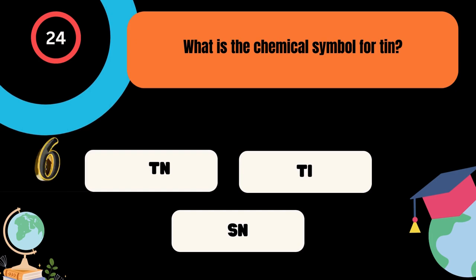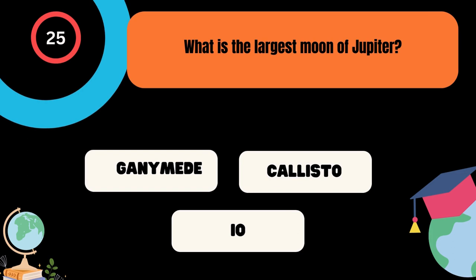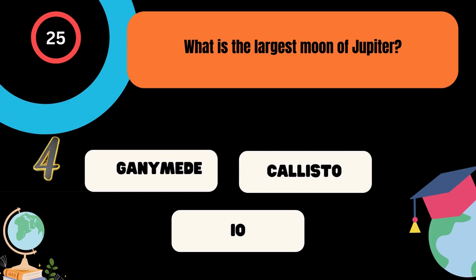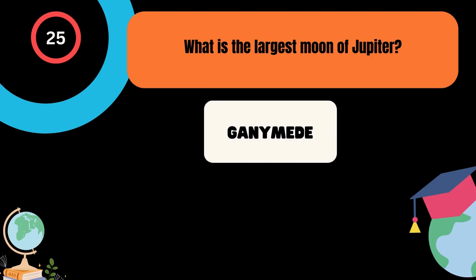What is the chemical symbol for tin? A. Tn, B. Ti, C. Sn. The correct answer is Sn. What is the largest moon of Jupiter? A. Ganymede, B. Callisto, C. Io. And the correct answer is Ganymede.